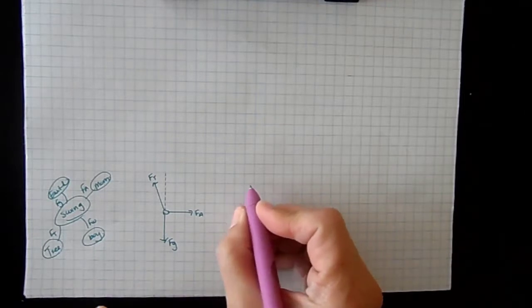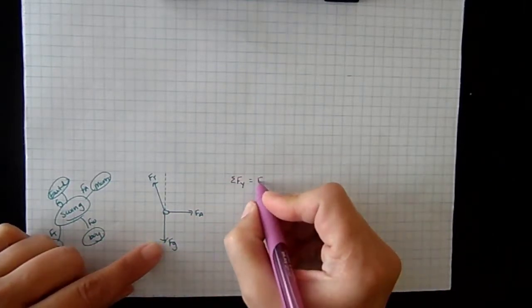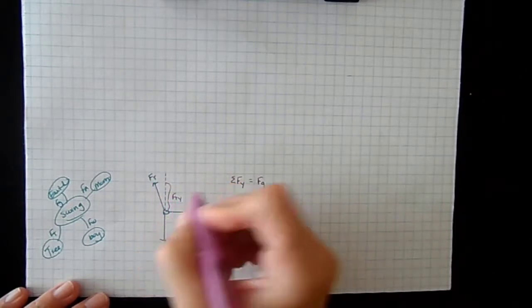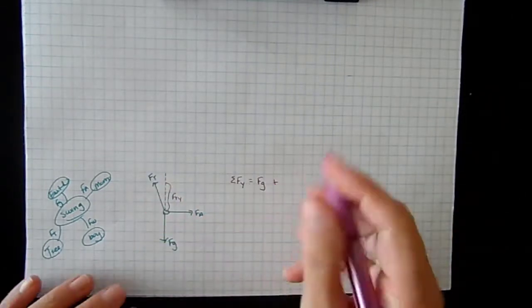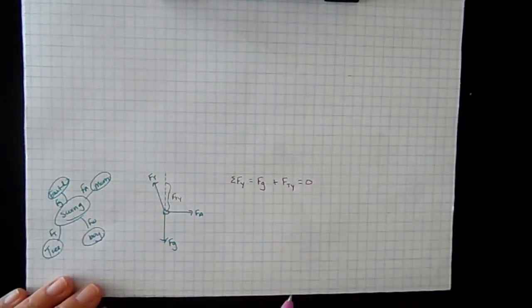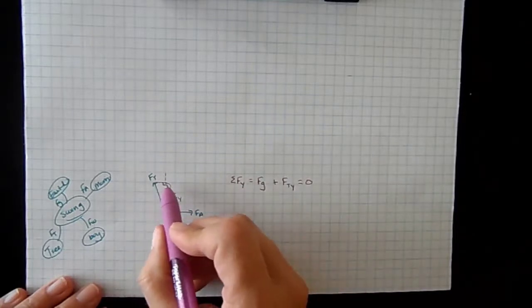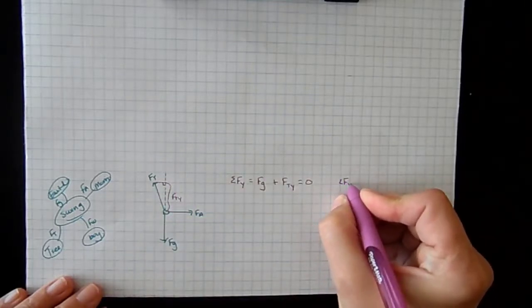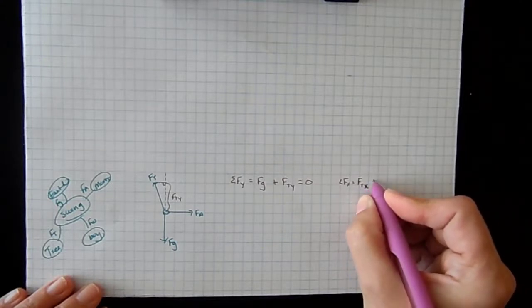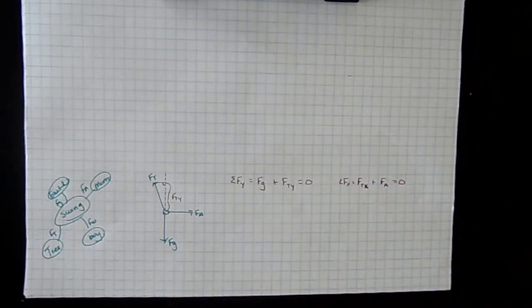Let's look at all the forces acting in the y direction. We have the force of gravity acting straight down, but we also have a y component of the tension force — not the total tension, just the y component. Since we're not moving, the sum equals zero. We also have an x component of tension and the applied force from mom, and those are also equal to zero because we're not moving.